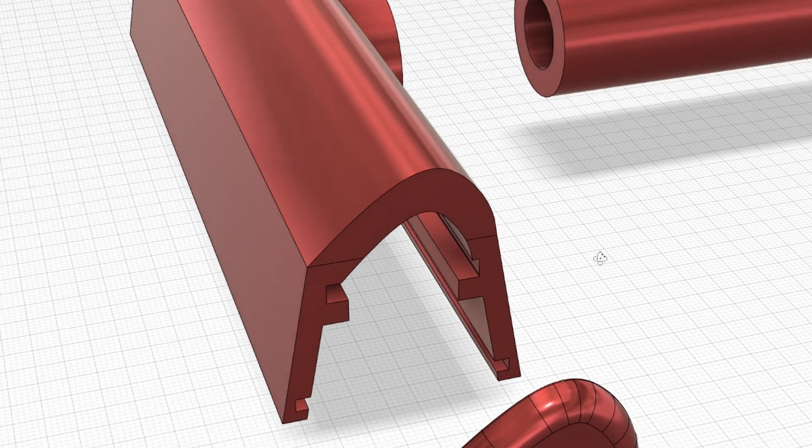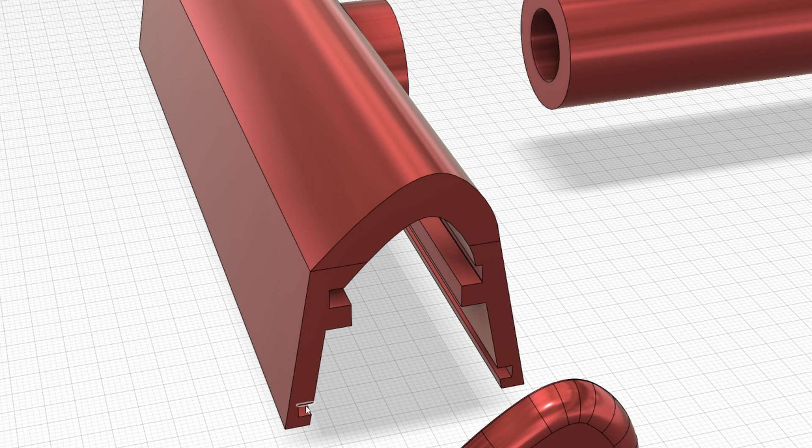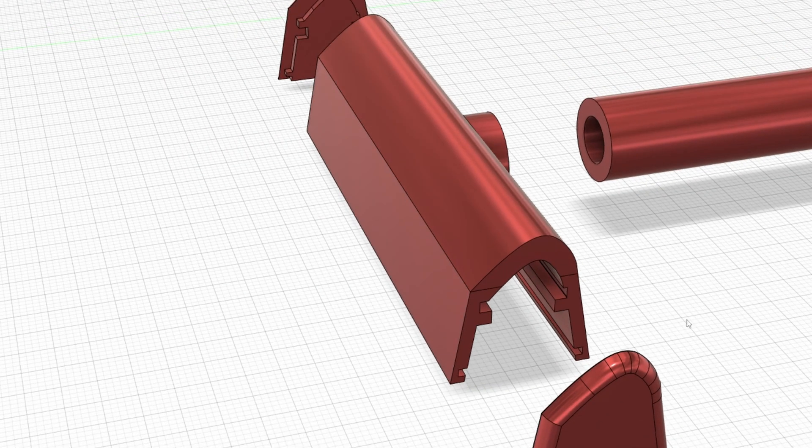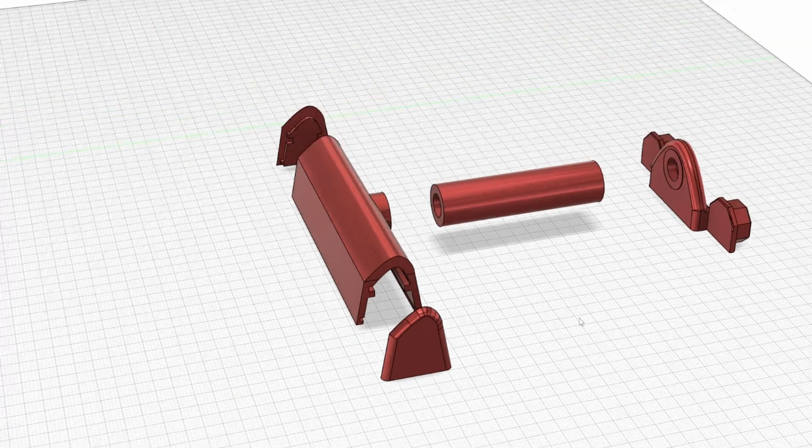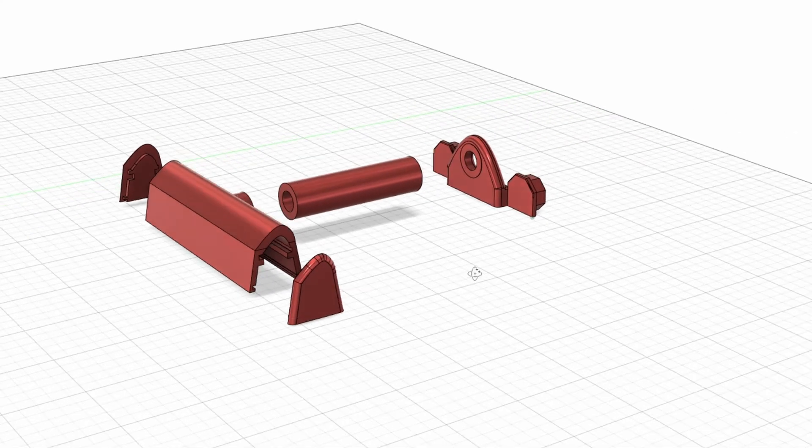Now if we zoom in this section here, these sort of cutouts, that's for the PCB board with LEDs and these two cutouts at the bottom that's so we can slide in that diffusion layer.